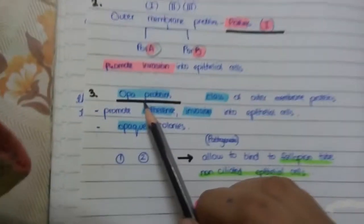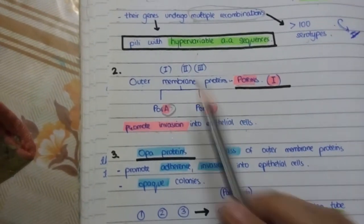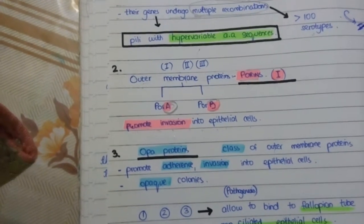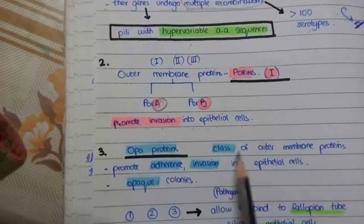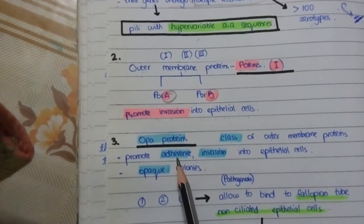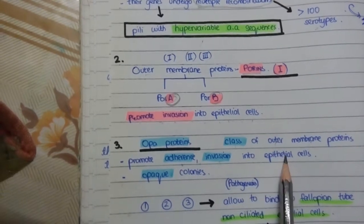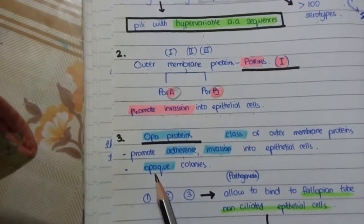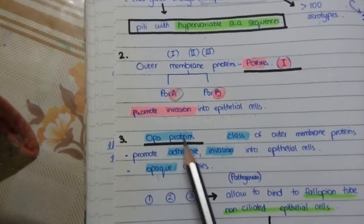Next are the OPA proteins. They are actually a class of these outer membrane proteins but are studied as separate virulence factors. They promote adherence and invasion into the epithelial cells, and they are responsible for the opaque appearance of colonies — hence their name, OPA proteins.